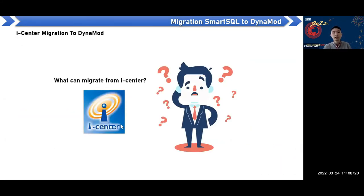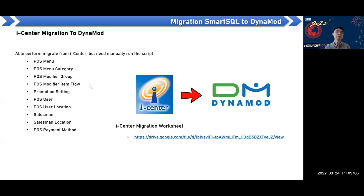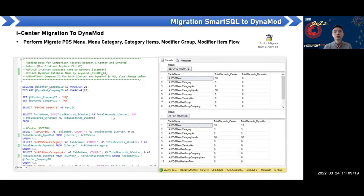For users who have iCenter, you can migrate certain data to Dynamo. Some users will ask to migrate the post menu, post menu category, modifier group, promotion, post user location, salesman, and post menu method. For these, you must manually run a script — download the document from the provided resource which explains how to migrate. Test this on your local PC first before applying to the customer's database.